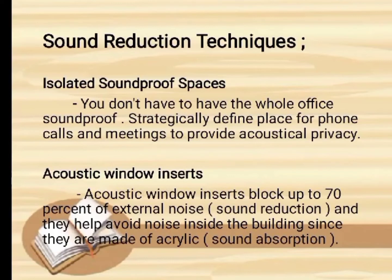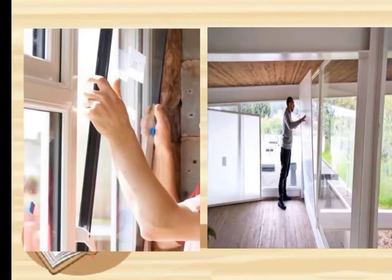The second technique is acoustic window inserts. Acoustic window inserts block up to 70% of external noise, and they help avoid noise inside the building since they are made of acrylic. They can also be used to create separated soundproof spaces. Soundproof a conference room to ensure private meetings are truly private, instead of using them only on external walls. Here are some examples of acoustic window inserts.